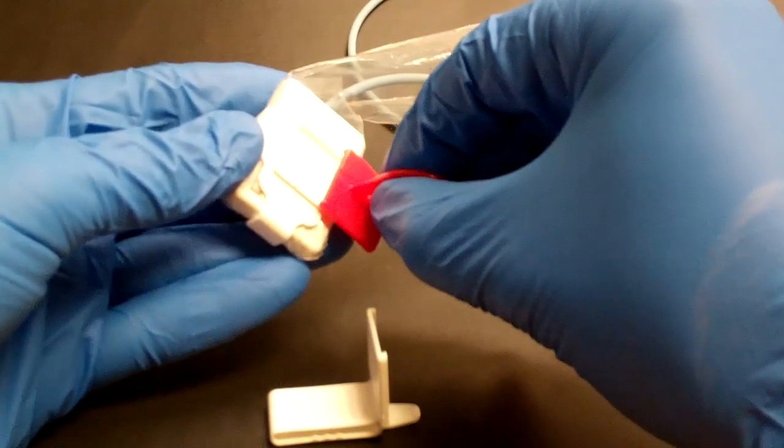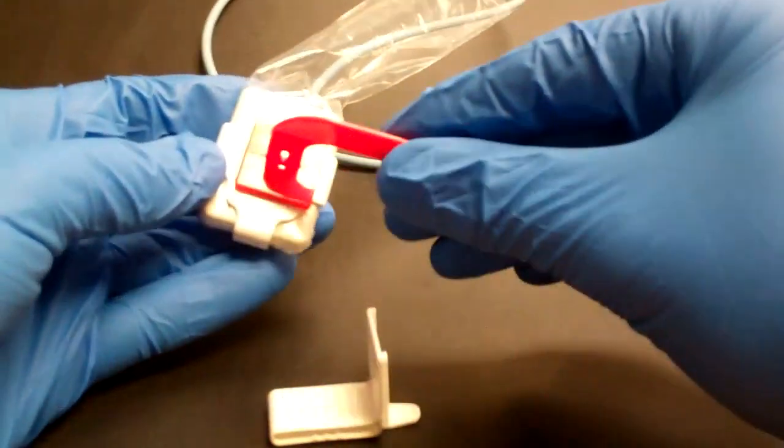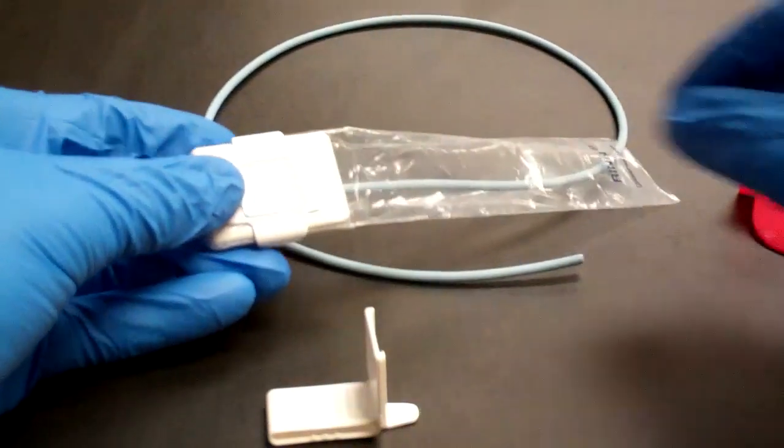If we wanted to do a vertical bite wing, we would just attach it from the side. You can see one bite piece is all you need for bite wings.